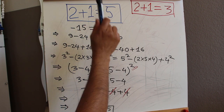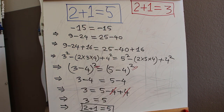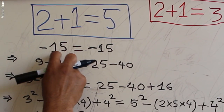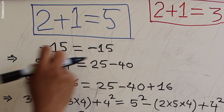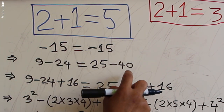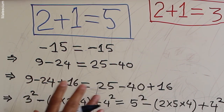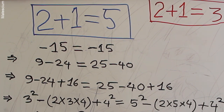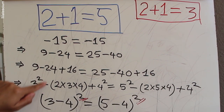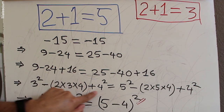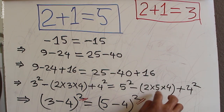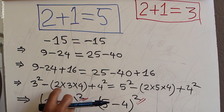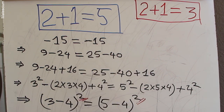Let me explain it once more. As I said, 2 plus 1 is not equal to 5, but I proved it equals 5 by hacking mathematics. I took minus 15 on both sides — rewriting the left as 9 minus 24 and the right as 25 minus 40 — then added 16 to both sides. Expanding: 9 is 3 squared, minus 24 is 2 times 3 times 4, and 16 is 4 squared; on the right, 25 is 5 squared, minus 40 is 2 times 5 times 4, and 16 is 4 squared.